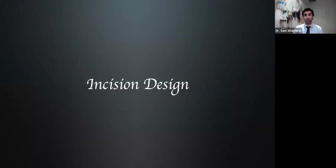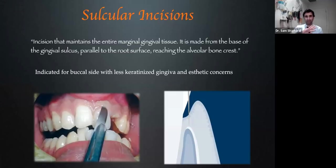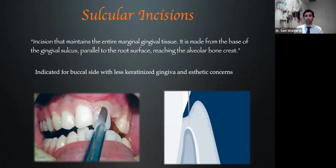Now we understand our incision design. Two types: the classic sulcular incision maintains the entire marginal gingival tissue. The key to a sulcular incision is that as we do it, we must ensure the blade is all the way down to bone — we have to feel tactilely that the blade is up against the bone, within the gingival sulcus with the tip touching the osseous crest. We'll demonstrate this in a case shortly.